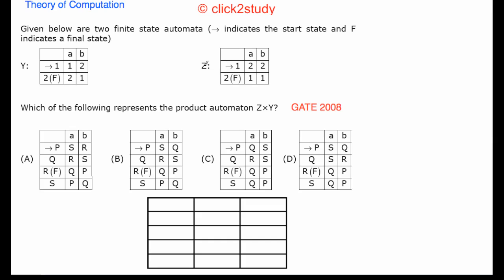Let's start the next problem in theory of computation. Given below are two finite state automata with start and final states marked. Usually a finite automaton is shown with transitions, start state, and final state, but in this case it's given as a table. These two representations are equal — what you can represent as a diagram you can also represent as a table.